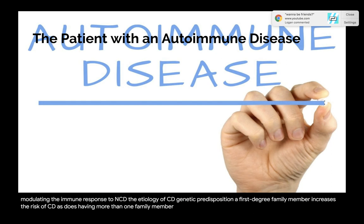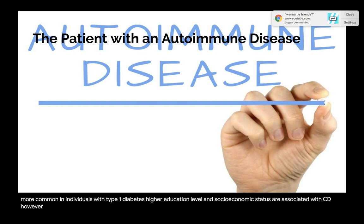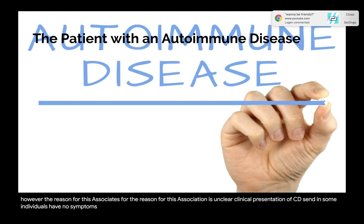The etiology of celiac disease: genetic predisposition — having a first-degree family member increases the risk, as does having more than one family member with CD. Gluten is the primary environmental trigger. CD is more common in individuals with type 1 diabetes. Higher education level and socioeconomic status are associated with CD, though the reason is unclear.